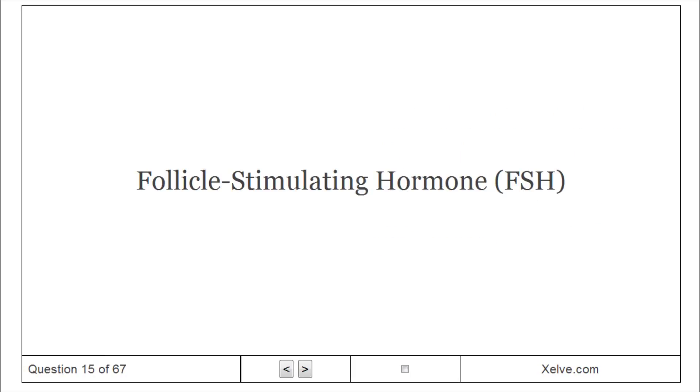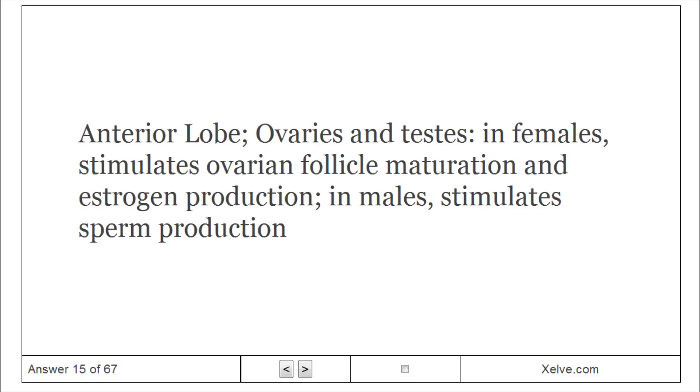Follicle stimulating hormone, FSH. Anterior lobe targets ovaries and testes. In females, stimulates ovarian follicle maturation and estrogen production. In males, stimulates sperm production.